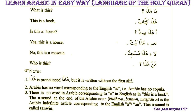Another thing to note: the 'n' sound at the end of an Arabic noun — for example, 'kitabun' — is the Arabic indefinite marker corresponding to the English 'a' or 'an'. This 'n' sound is called 'tanwin'.